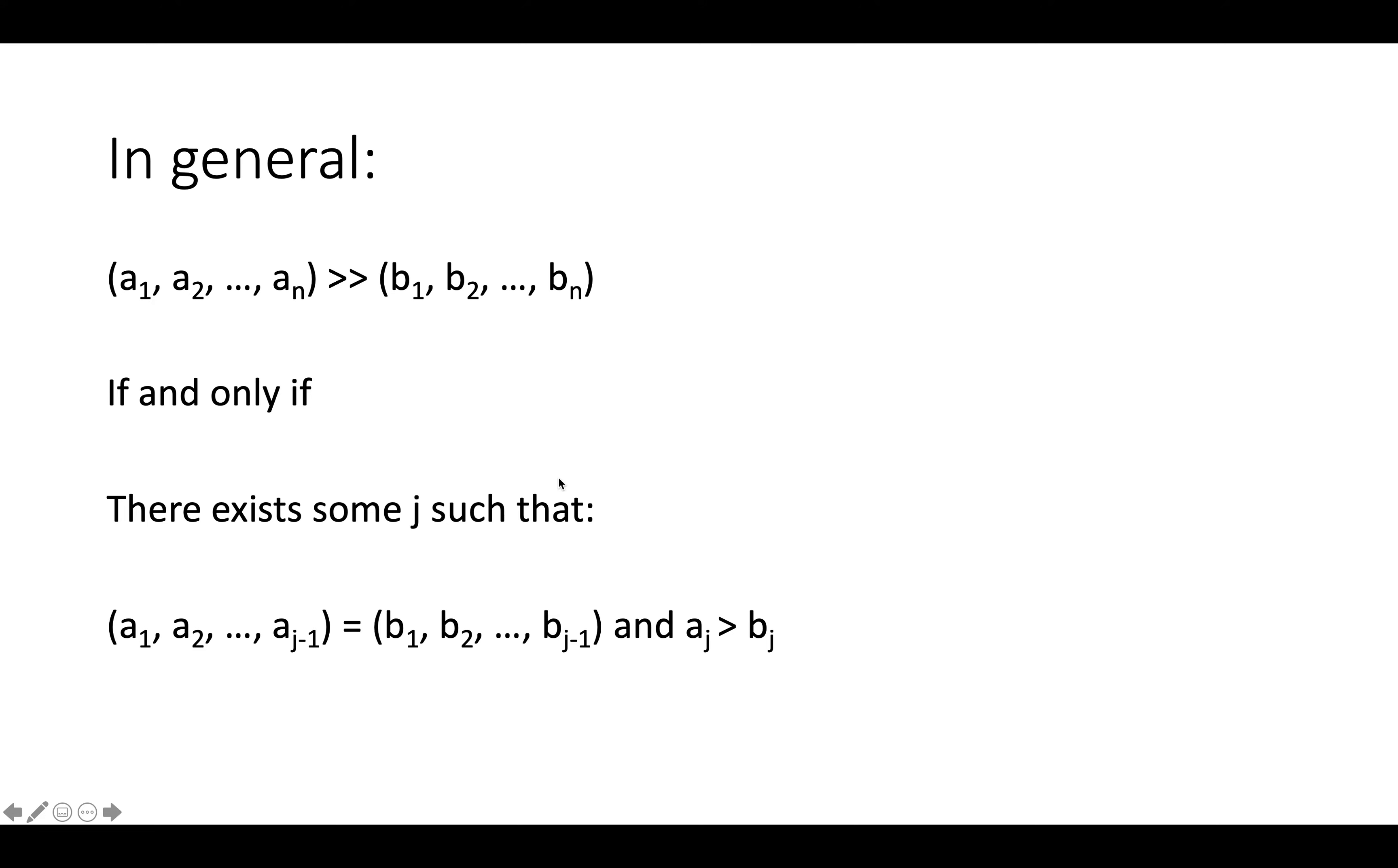And this actually works for multidimensional loop nests, so in general, if we have an n-dimensional loop nest, statements can be represented by n-dimensional vectors, and the n-dimensional vector a1 through an is lexicographically greater than b1 through bn, if and only if there's some j, there's some index into the vector, such that the sub-vector, I should actually say some j less than n, right.